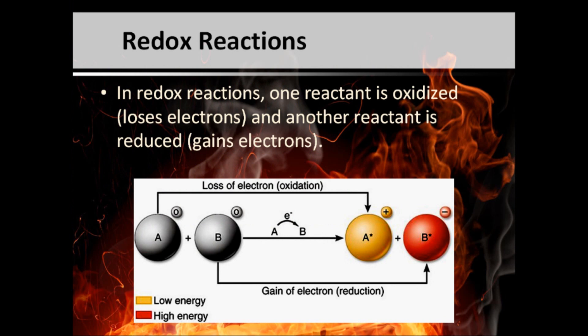As we already know, redox reactions occur when one reactant loses electrons, known as oxidation, and another reactant gains electrons, known as reduction. An example of redox reactions and explosives comes from the decomposition of nitroglycerin, which is a high explosive. It decomposes into nitrogen, carbon dioxide, water vapor, and oxygen.